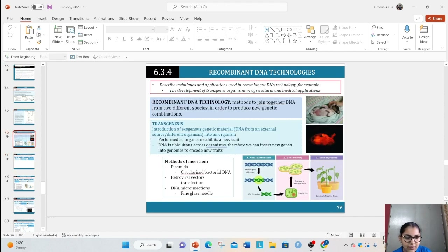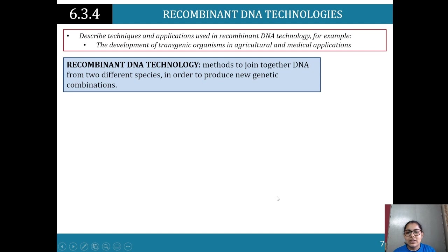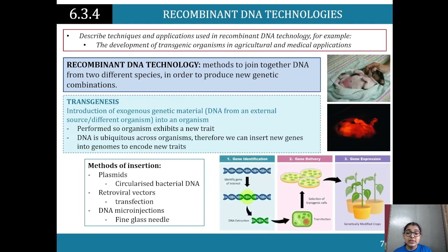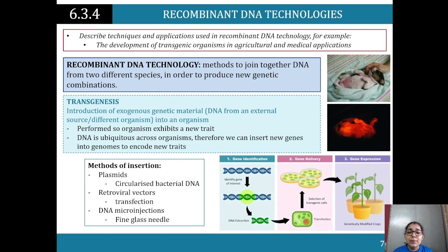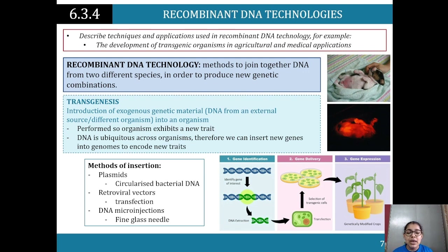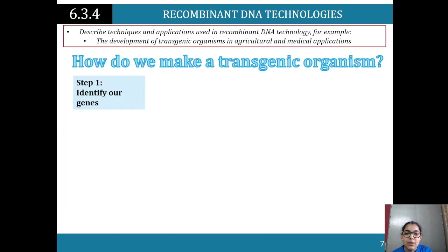Recombinant DNA technology involves methods to join together DNA from two different species to produce new genetic combinations. Transgenesis is the introduction of exogenous genetic material into an organism so it exhibits a new trait. DNA is ubiquitous across organisms, so we can insert new genes into genomes to code for new traits. Methods of insertion include plasmids (circularized bacterial DNA), retroviral vectors (transfection), and DNA microinjection using a fine glass needle.